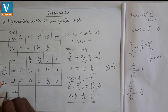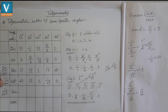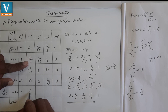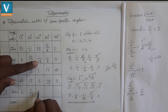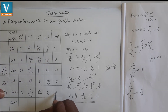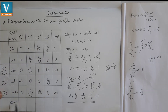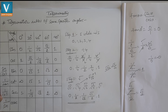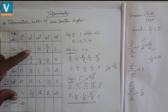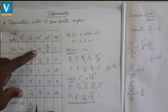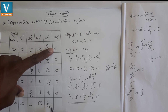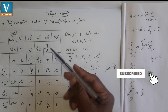Secant is the multiplicative inverse of cosine, that is 1/cos. So: sec 0° = 1/1 = 1; sec 30° = reciprocal of √3/2 = 2/√3; sec 45° = reciprocal of 1/√2 = √2; sec 60° = reciprocal of 1/2 = 2; sec 90° = 1/0 = not defined (infinity). Cosecant is 1/sin: cosec 0° = 1/0 = not defined; cosec 30° = 2; cosec 45° = √2; cosec 60° = 2/√3; cosec 90° = 1.